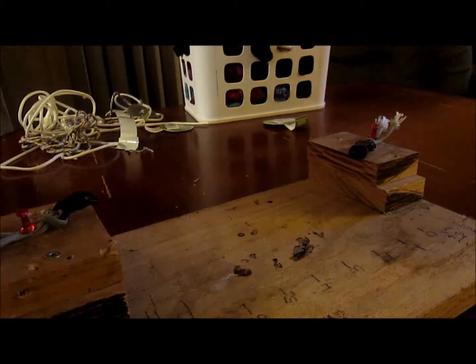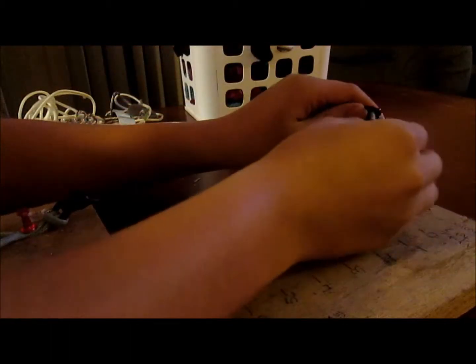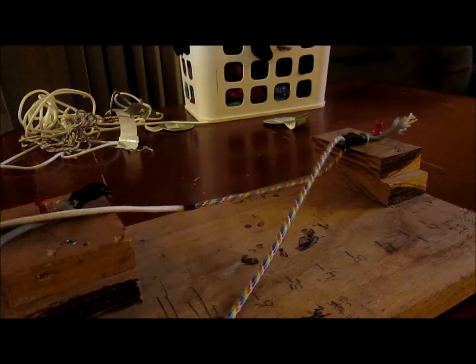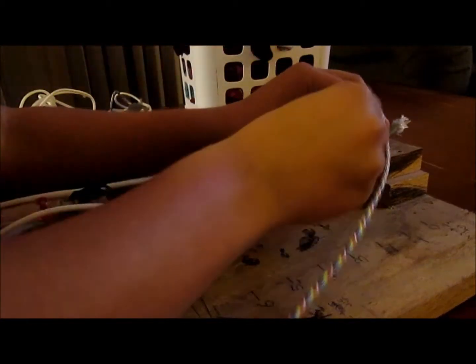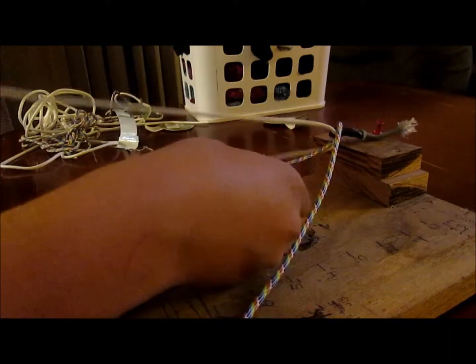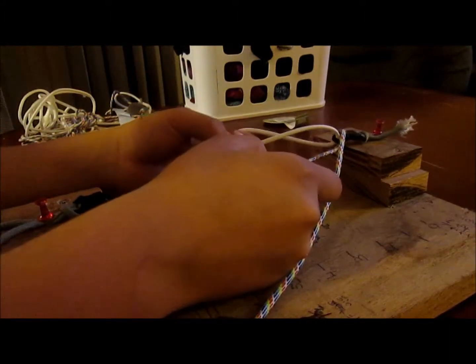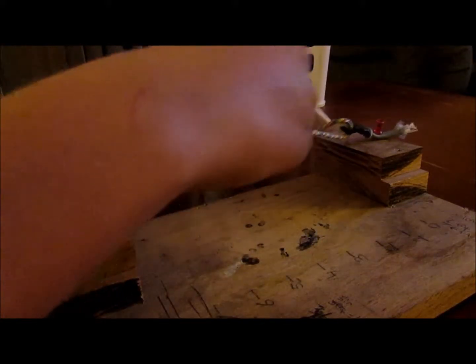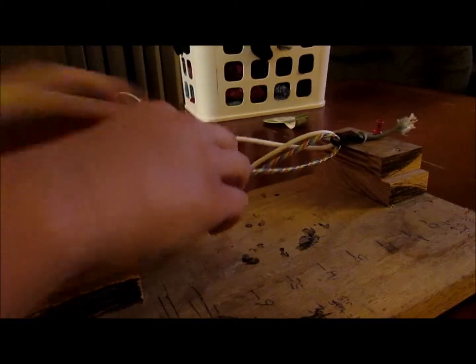Then what you're going to want to do is put it through the first loop, put the two ends through. So this end, then you're going to do this end. Then when you start seeing the loop, you're going to pull these two cords through the loop. Then you're just going to pull tight.